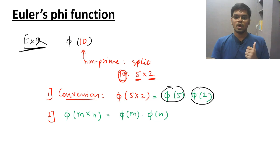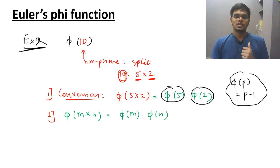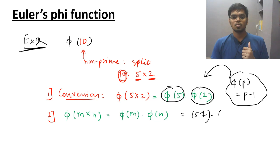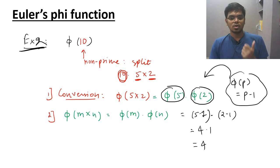In example one I showed you that phi of p equals p minus 1. Applying that concept here: phi of 5 equals 5 minus 1, and phi of 2 equals 2 minus 1, giving us 4 times 1. The answer is 4.